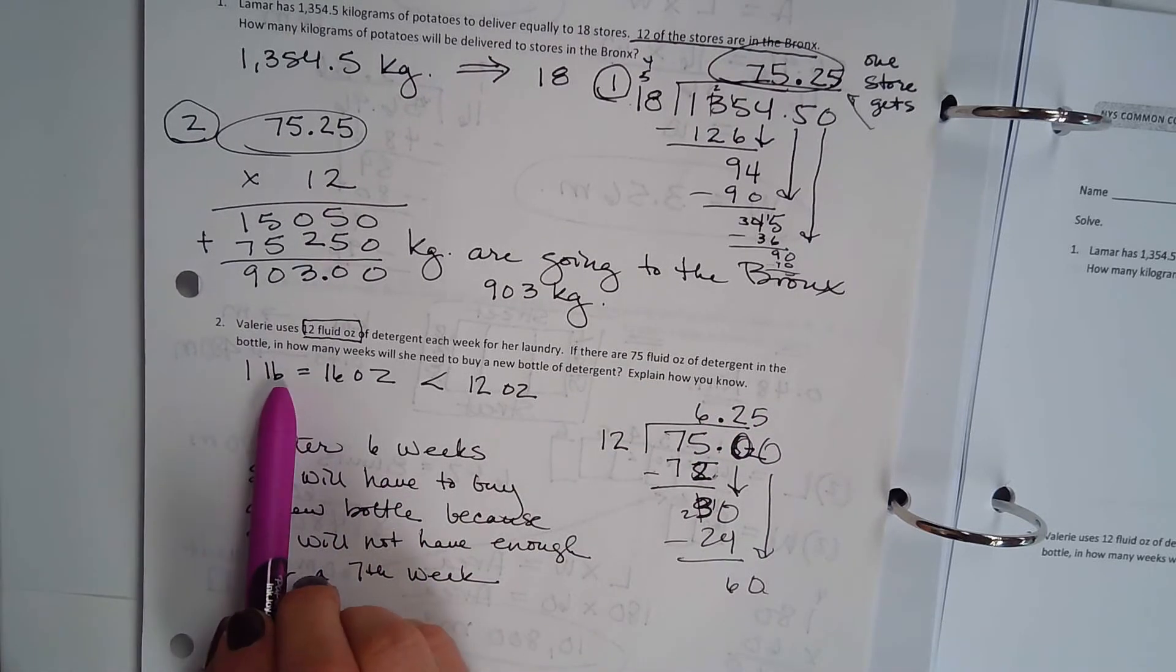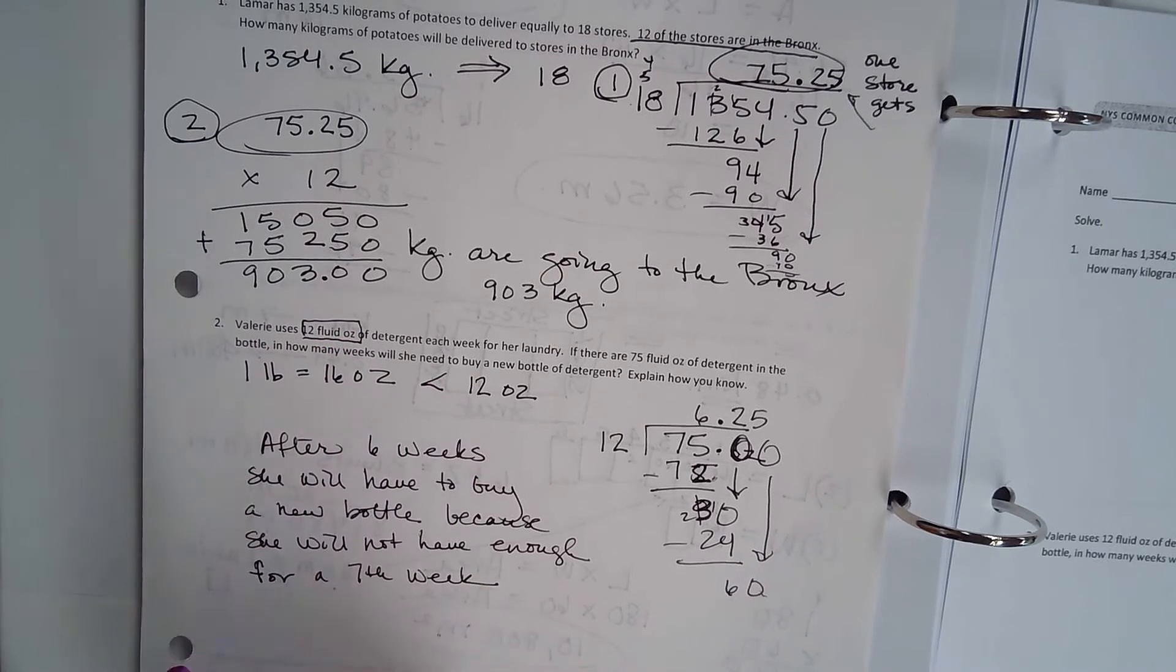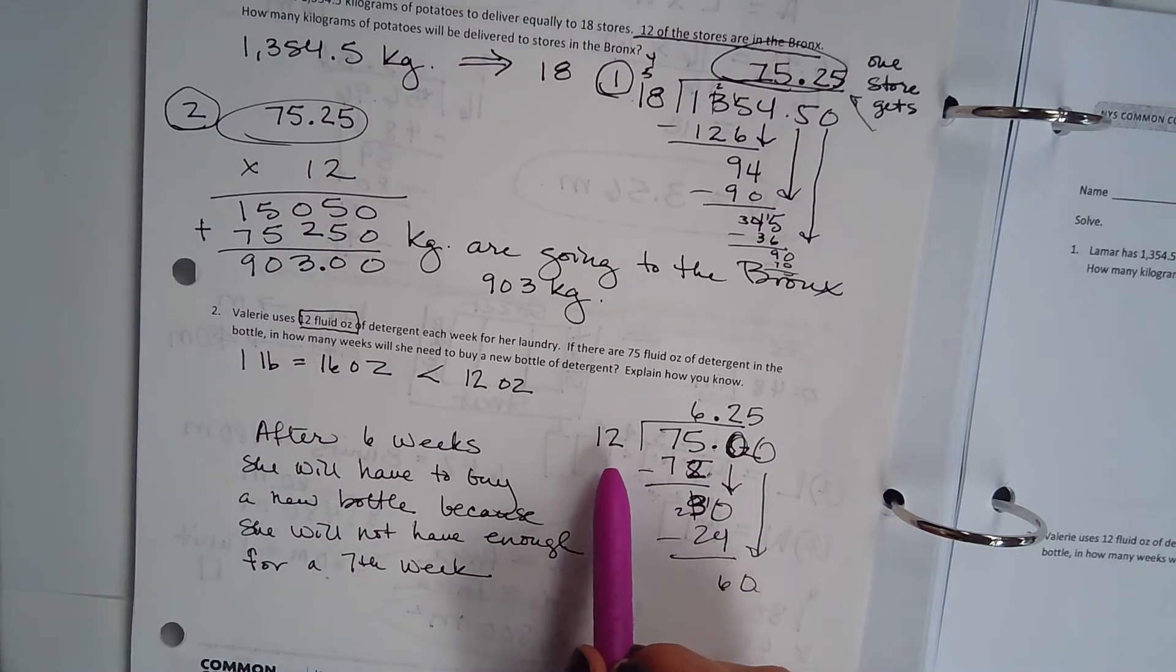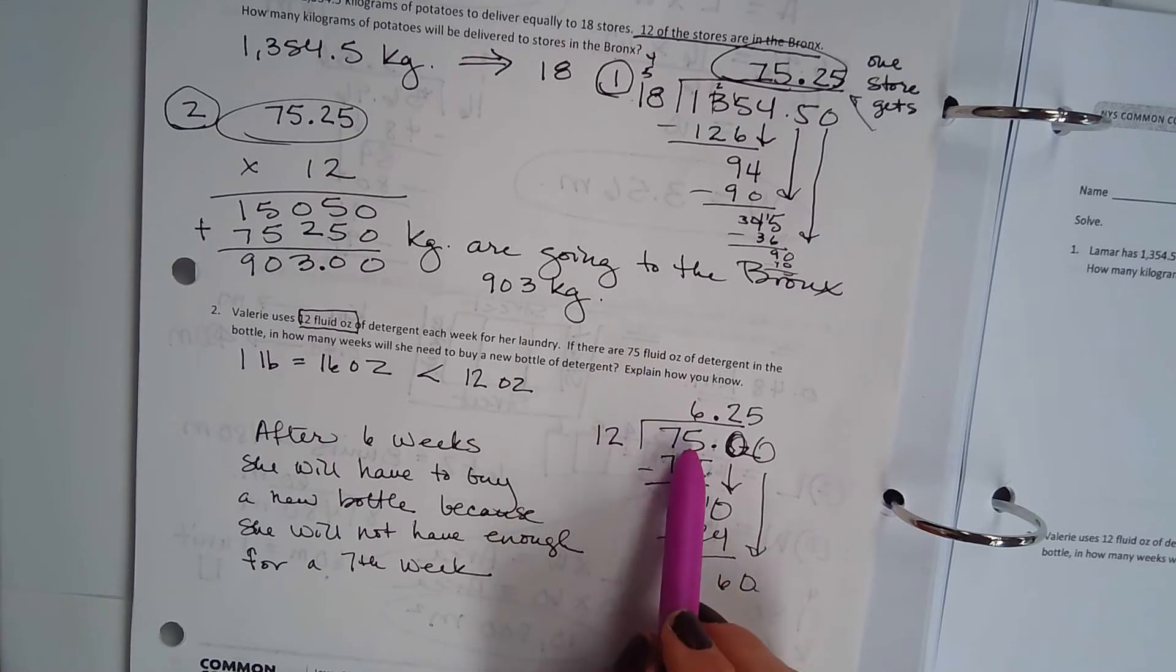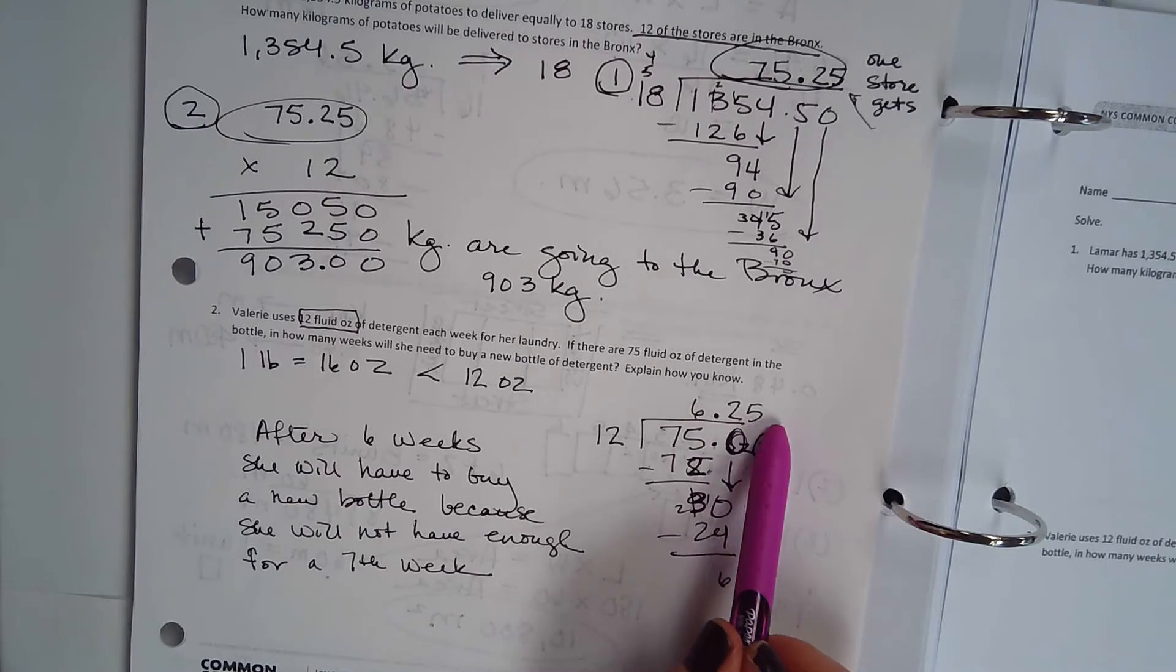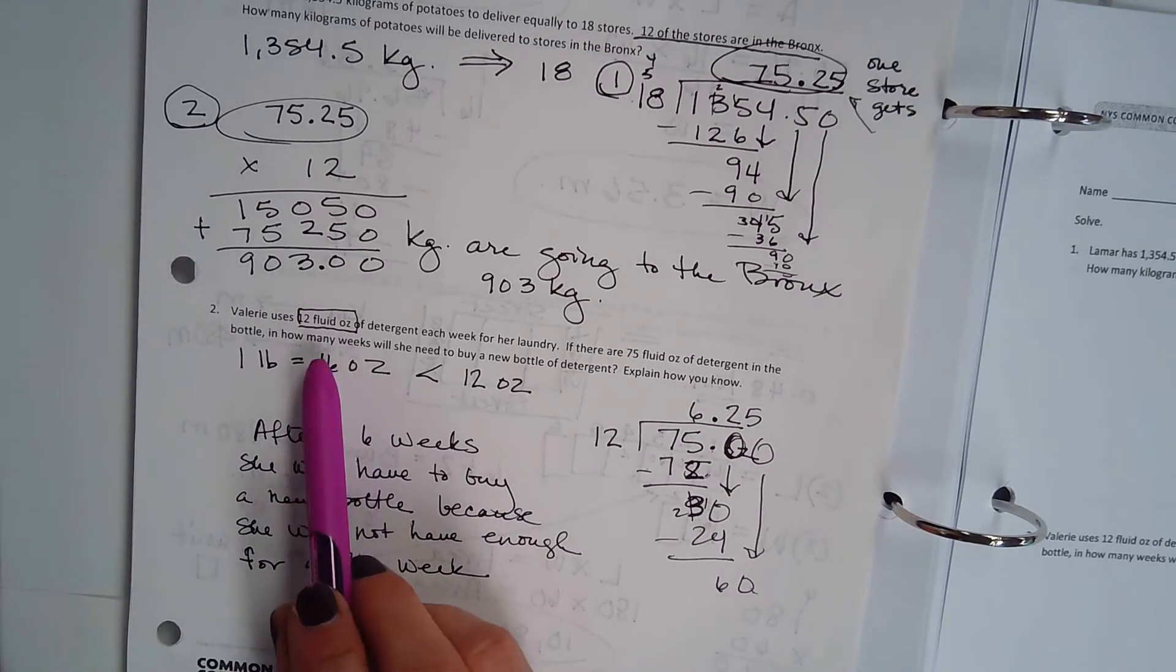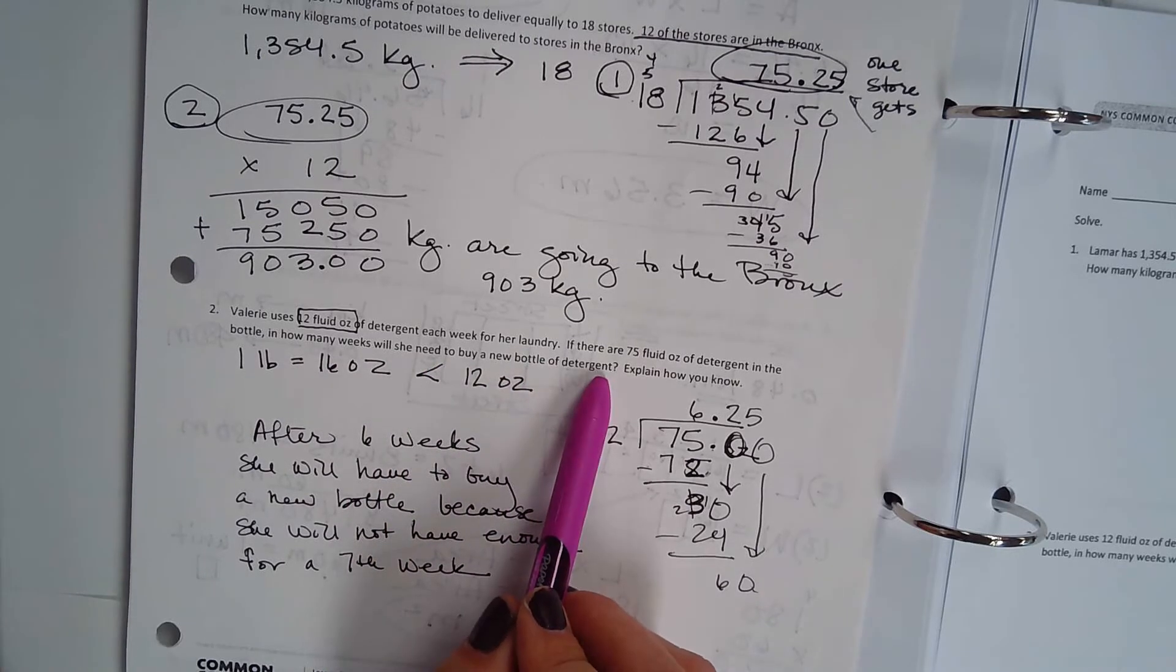So we know that one pound equals 16 ounces. So we know that 12 fluid ounces is less than that 16 ounces. So what we're going to do is divide the 12 ounces into the 75 fluid ounces and end up with 6.25.